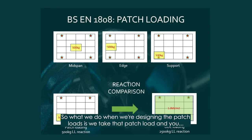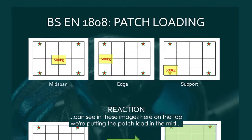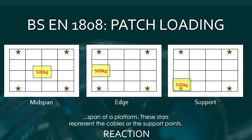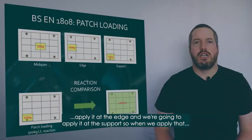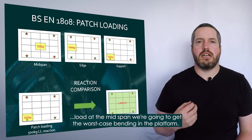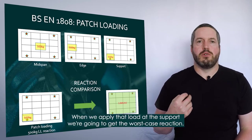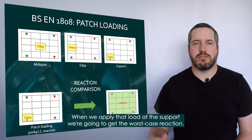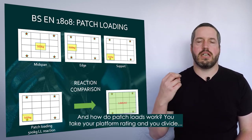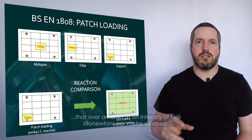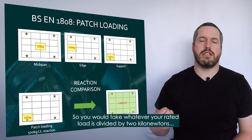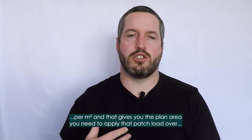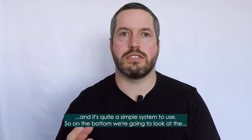When designing to patch loads, you take that patch load and apply it in the most onerous positions. In the images here, at the top we're putting the patch load at the mid-span of a platform — the stars represent the cables or support points. We apply it at mid-span, then at the edge, and at the support. Applying the load at mid-span gives the worst case bending, and applying it at the support gives the worst case reaction. You take your platform rating, divide it by an intensity of two kilonewtons per meter squared, and that gives you the plan area over which to apply the patch load. It's quite a simple system to use.